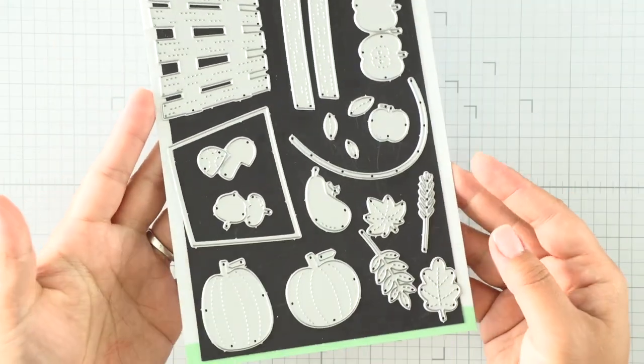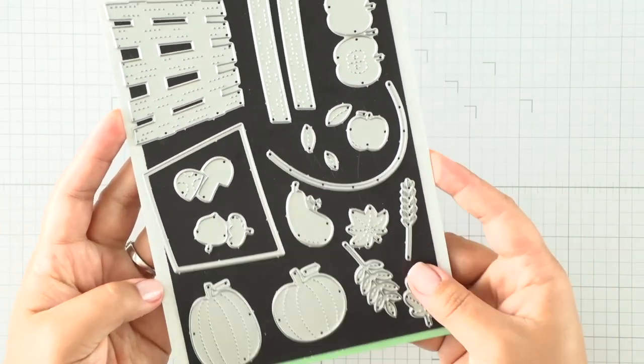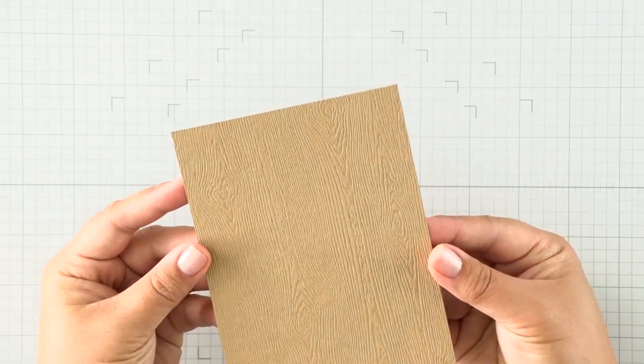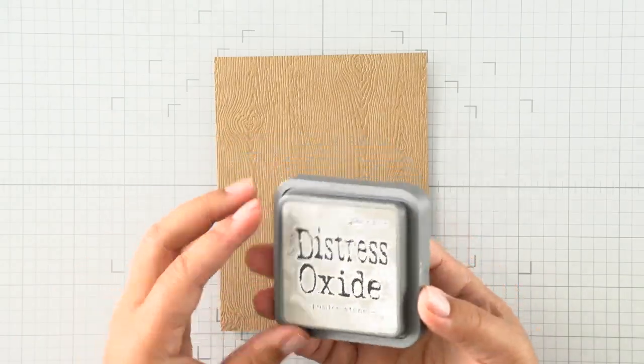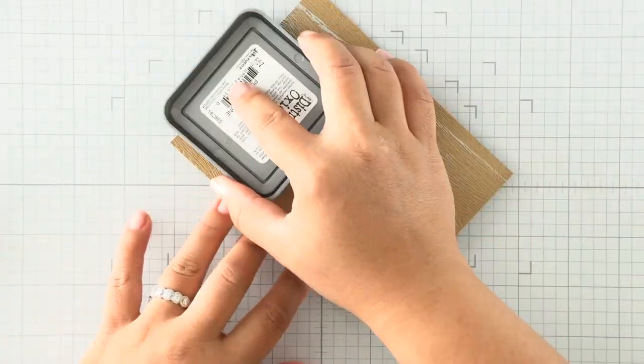We've seen lots of apples and strawberries, so I'm excited to share this one because we're going to be creating a full fall basket with pumpkin, squash, and some foliage. To start, I'm going to begin with a brown piece of woodgrain cardstock, and this is going to be what we create our baskets with.